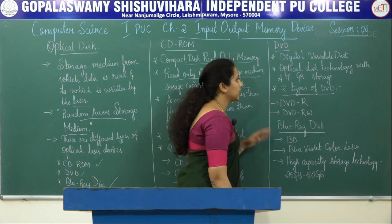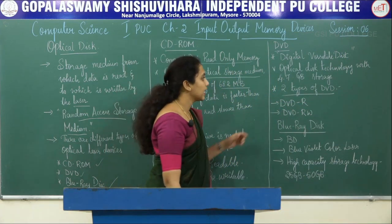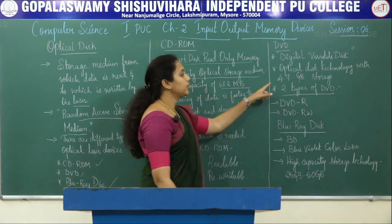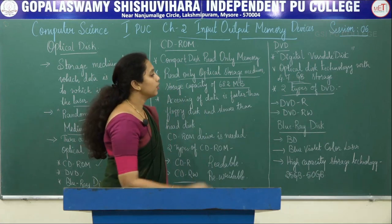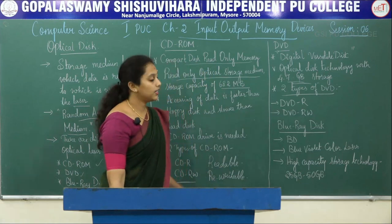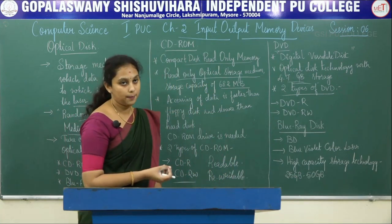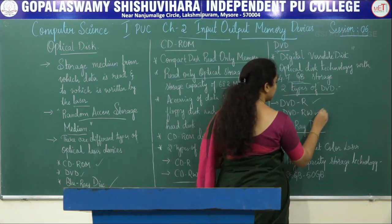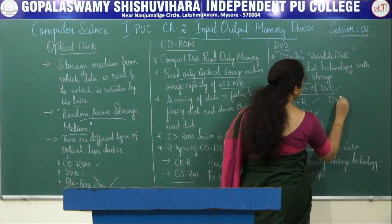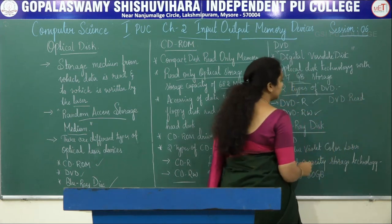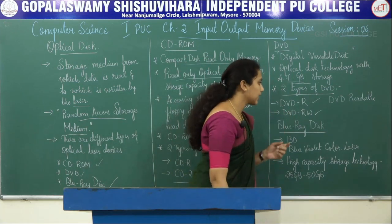Next is DVD. DVD stands for Digital Versatile Disk. It is an optical disk technology with a storage capacity of 4.7 GB. We can store not only videos but also music and other forms of data on it. The two types of DVD are DVD-R, referred to as Digital Versatile Disk Readable, and DVD-RW, referred to as Digital Versatile Disk Rewritable.